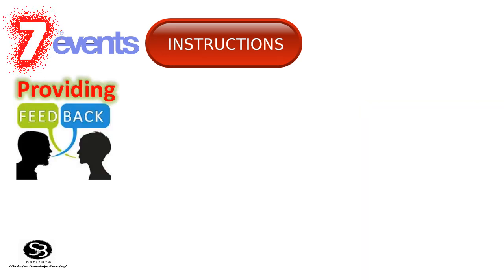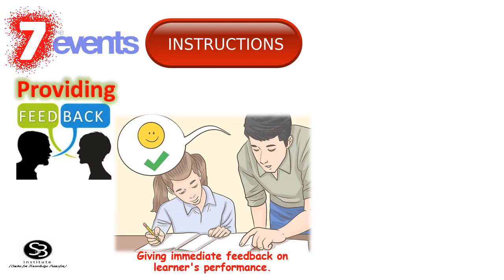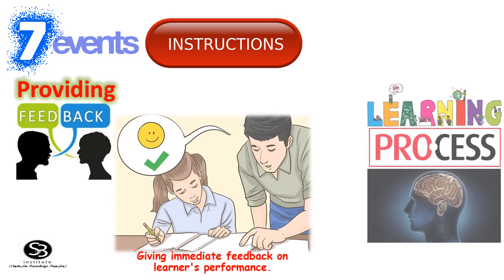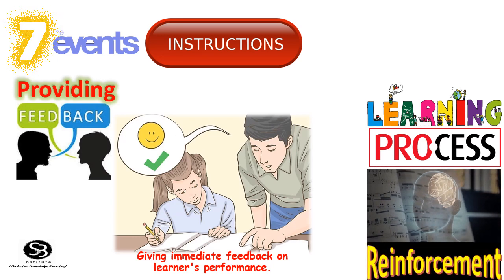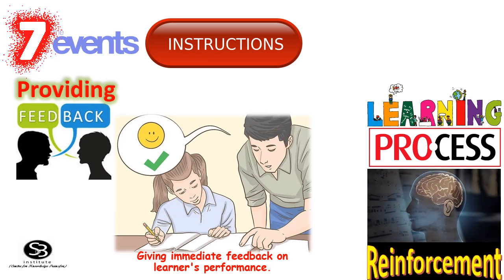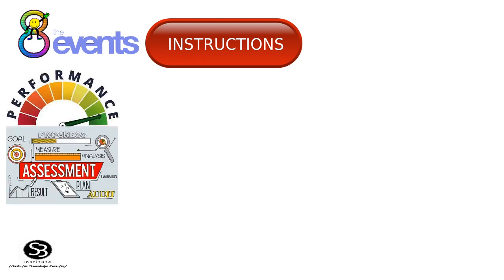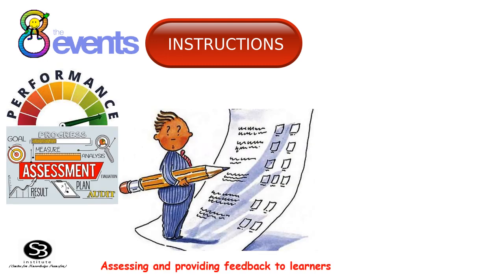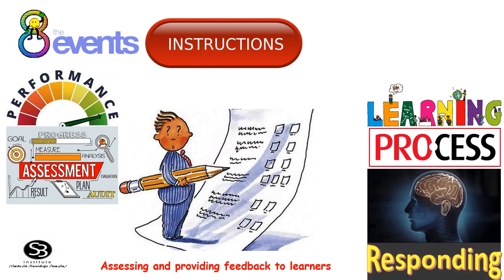The seventh event is Providing Feedback — giving immediate feedback on learners' performances. The learning processes involved here are reinforcement and error correction. The eighth event is Assessing Performance — assessing and providing feedback to the learner. The learning processes involved are responding and retention.